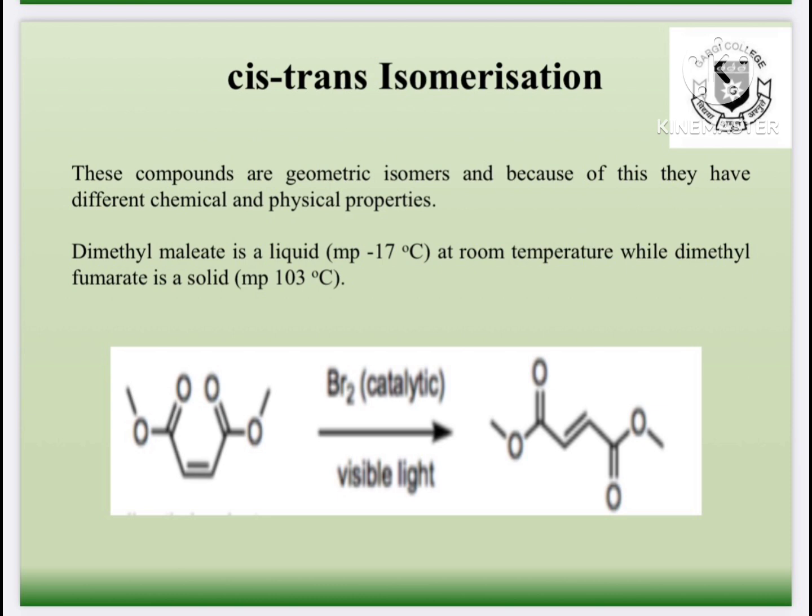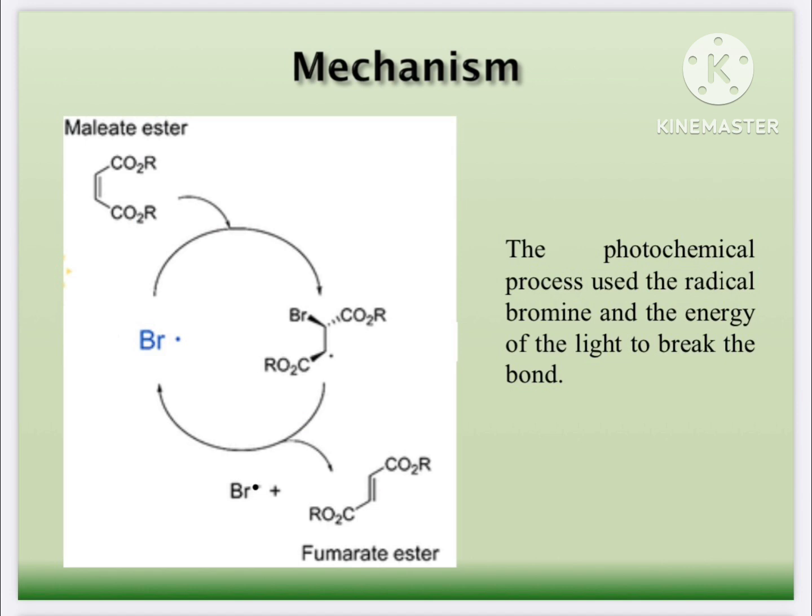The cis double bond is converted to trans. Both isomers differ in their physical properties such as melting point and boiling point. This is the mechanism of the reaction. The bromine free radical breaks the double bond and converts into a trans form, and the trans isomer fumarate is obtained.